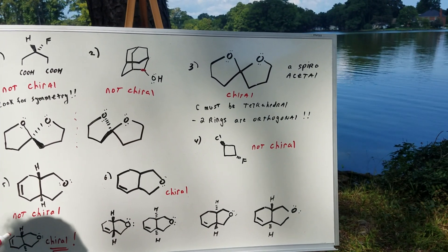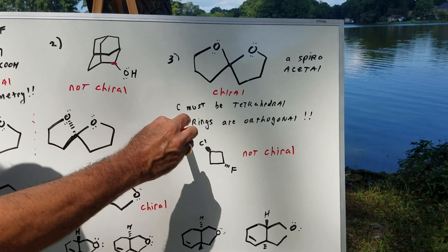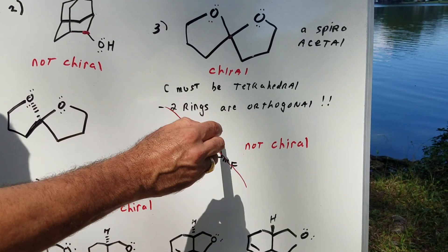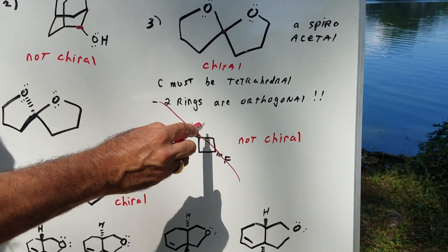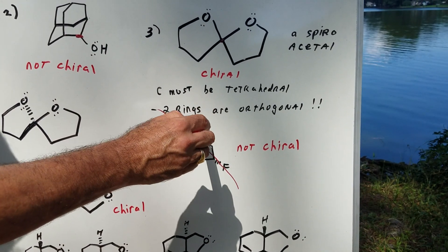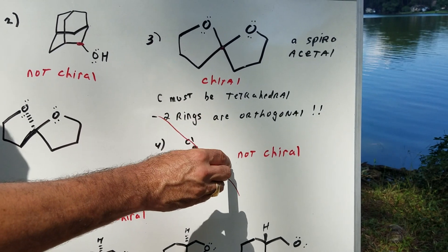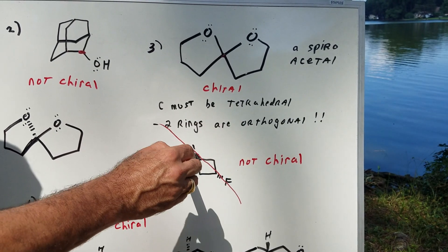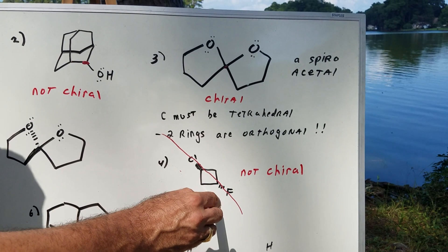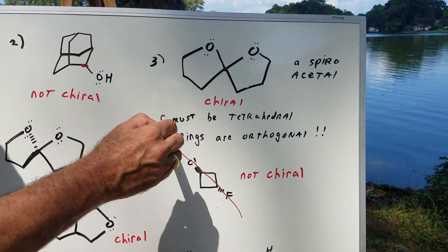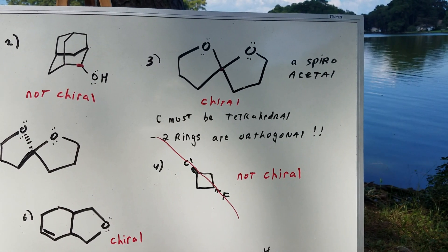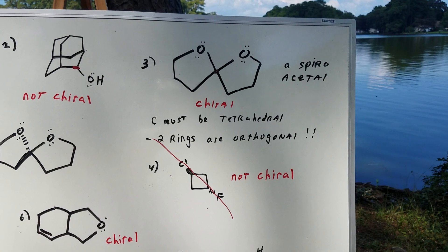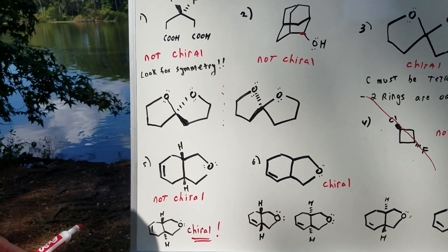Number four is easy. This is not chiral because if you cut a line down the middle, half the chlorine is on one side and half the fluorine is on the other side — and vice versa. This molecule has a plane of symmetry. That's easy.